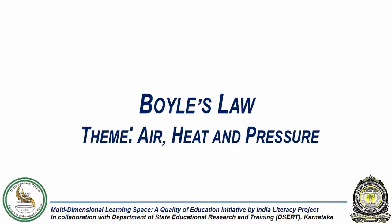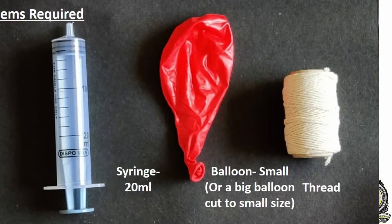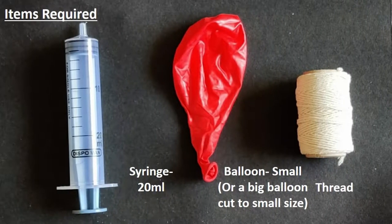In this simple experiment, we will demonstrate Boyle's law. For this we need a 20 ml or larger syringe, a small balloon or a big balloon cut to a small size, and a thread to tie the balloon.